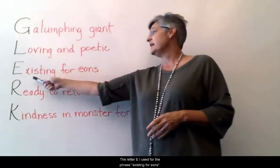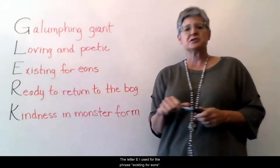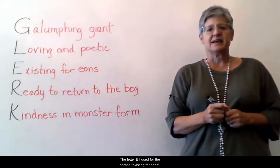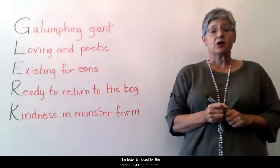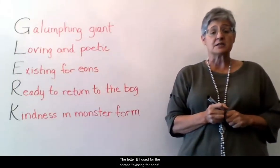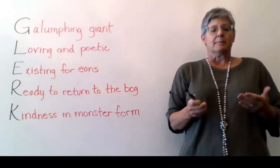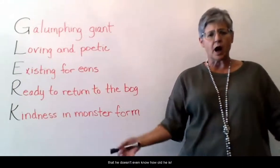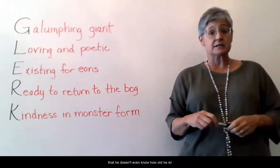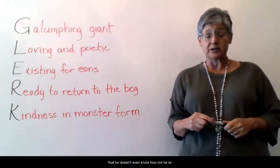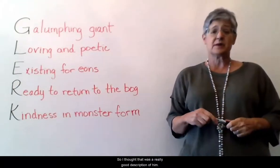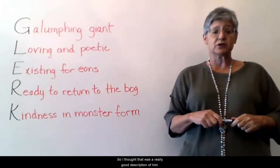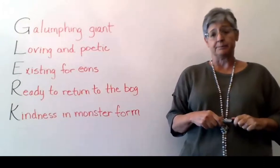For the letter E, I used the phrase 'existing for eons,' meaning he's lived a very, very long time — so long in fact that he doesn't even know how old he is. So I thought that was a really good description of him.